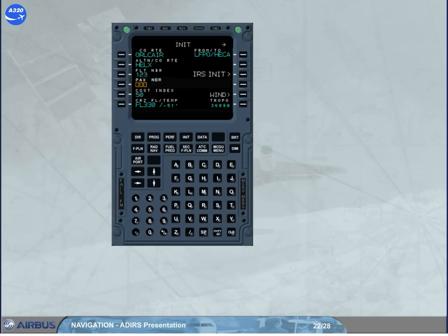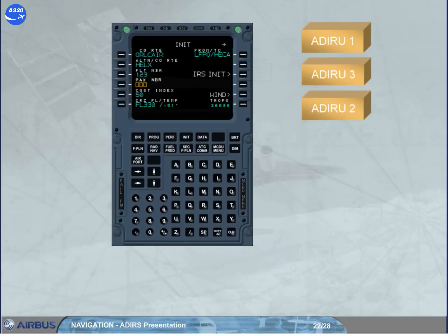The alignment phase is completed when the ADRUs are initialized to an appropriate position. With GPS available, initialization is automatic using the GPS position and does not require pilot action. However, automatic initialization may be manually overridden during the alignment phase by accessing the IRS init page. This method will be explained later in the operation module.